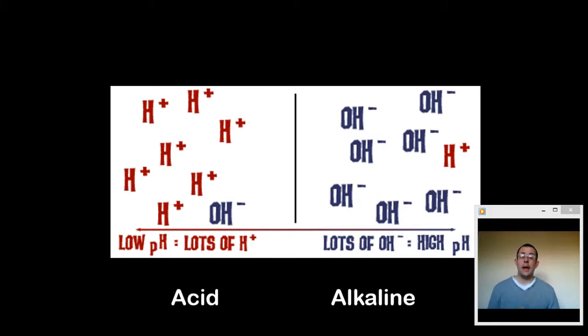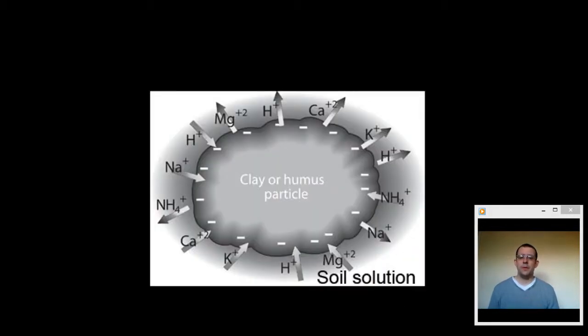When you look at soil, soil particles can absorb these ions. The more hydrogen ions you have inside the soil particles, then the more acidic your soil is going to be.